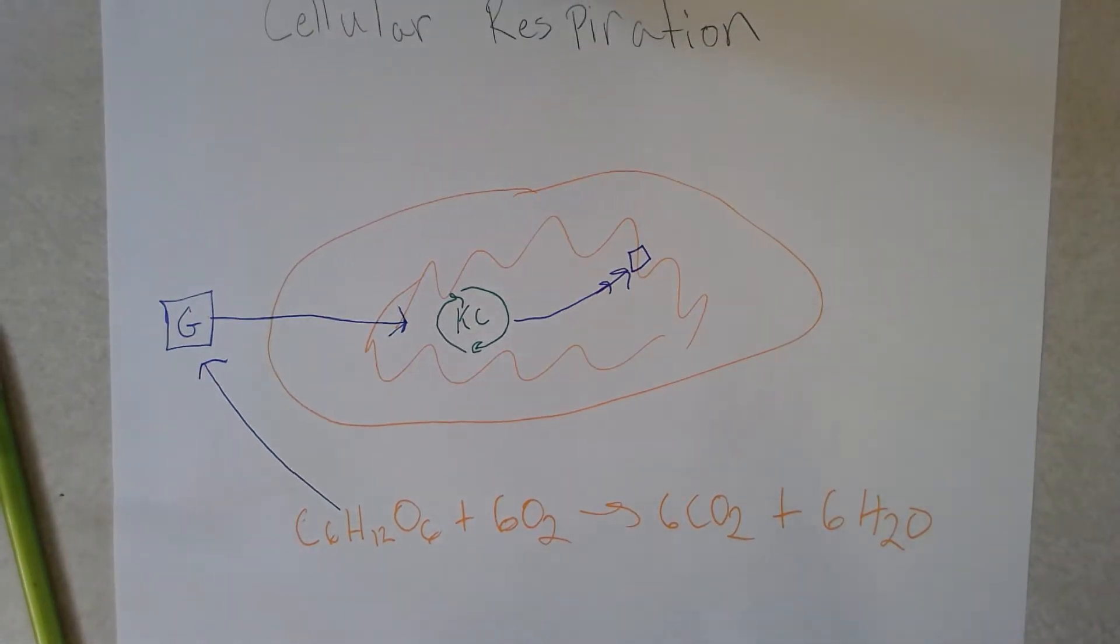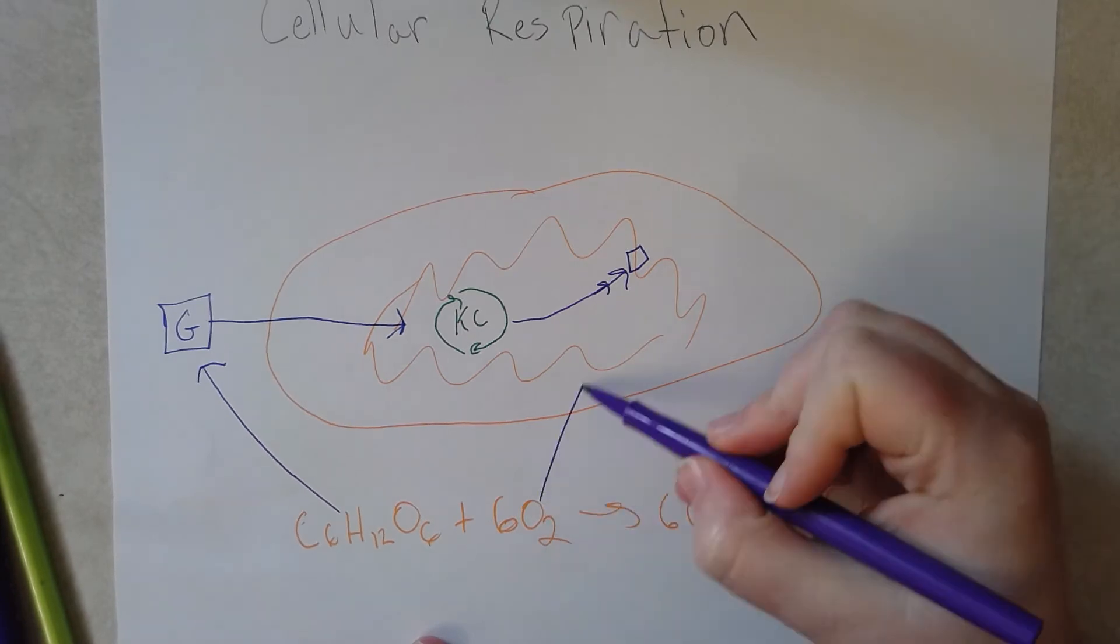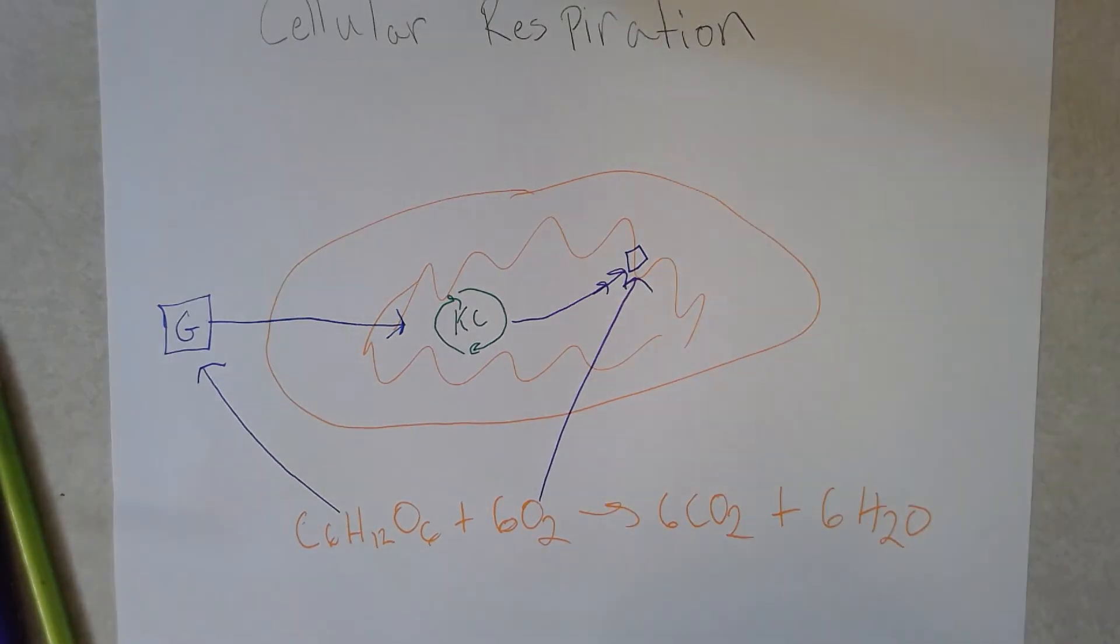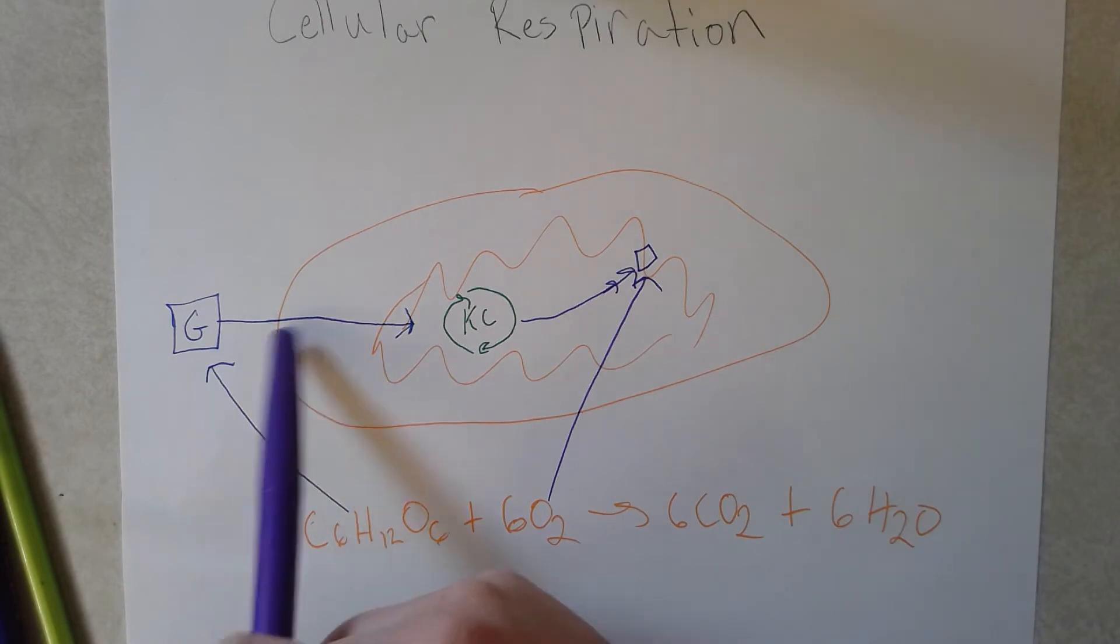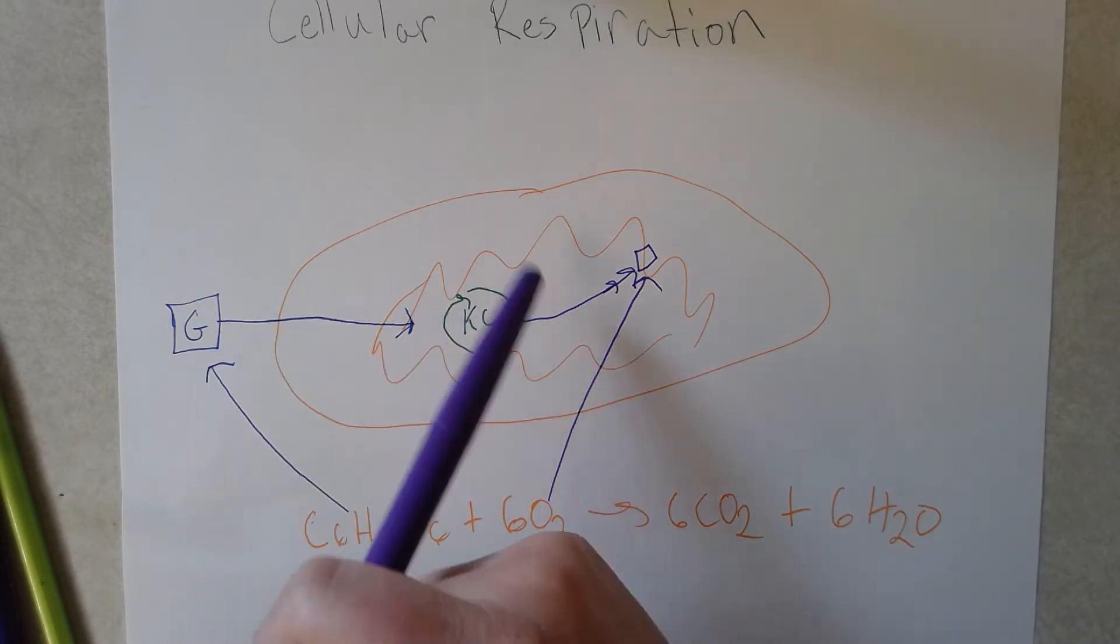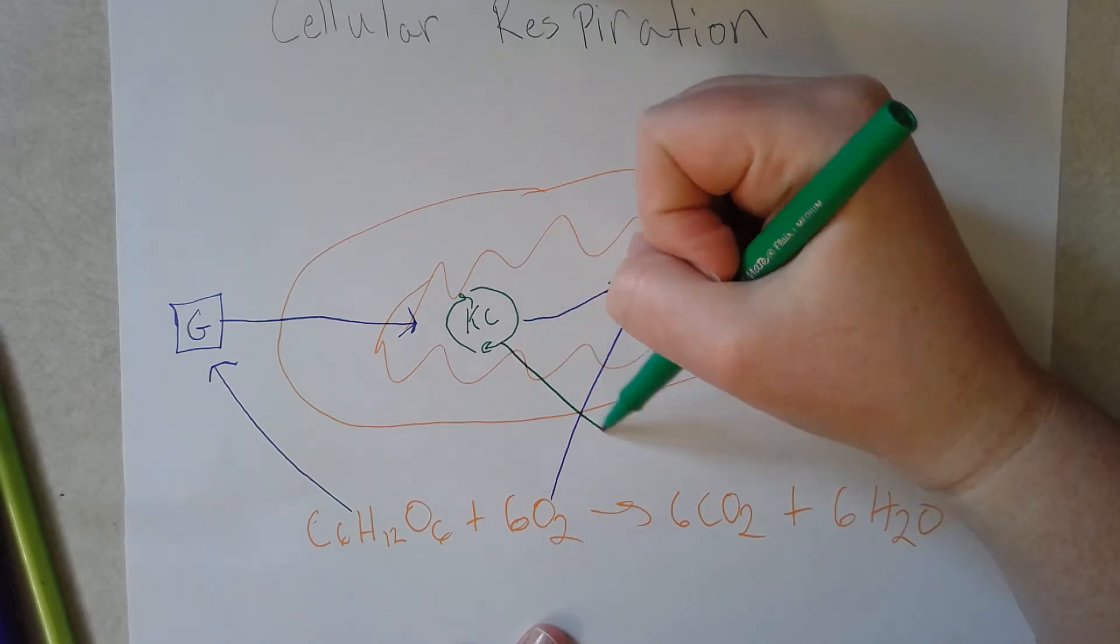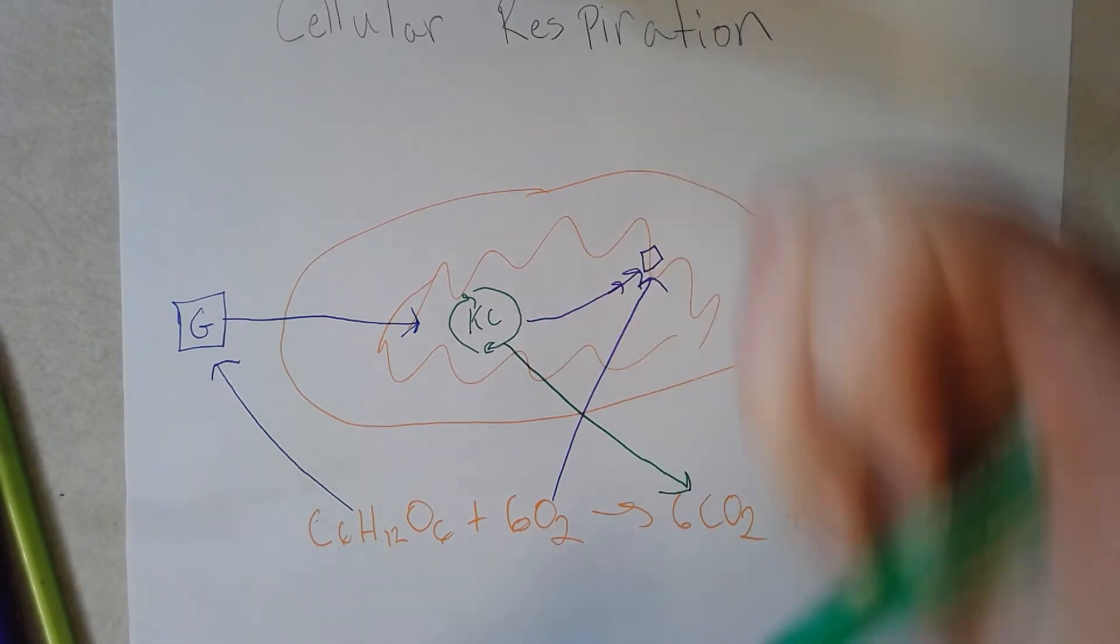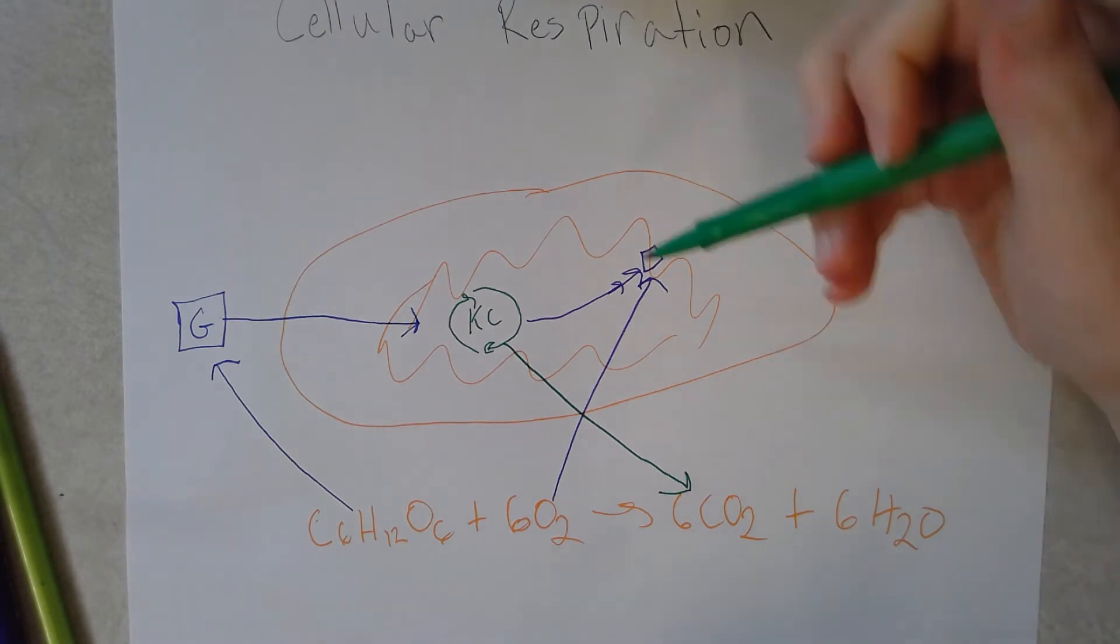And oxygen is the final electron acceptor in the electron transport chain. And so what happens is glucose enters glycolysis, it comes out as pyruvic acid, it's going to go into the Krebs cycle. You are going to have carbon dioxide produced as a byproduct of the Krebs cycle, and you are going to have water come out of the electron transport chain.